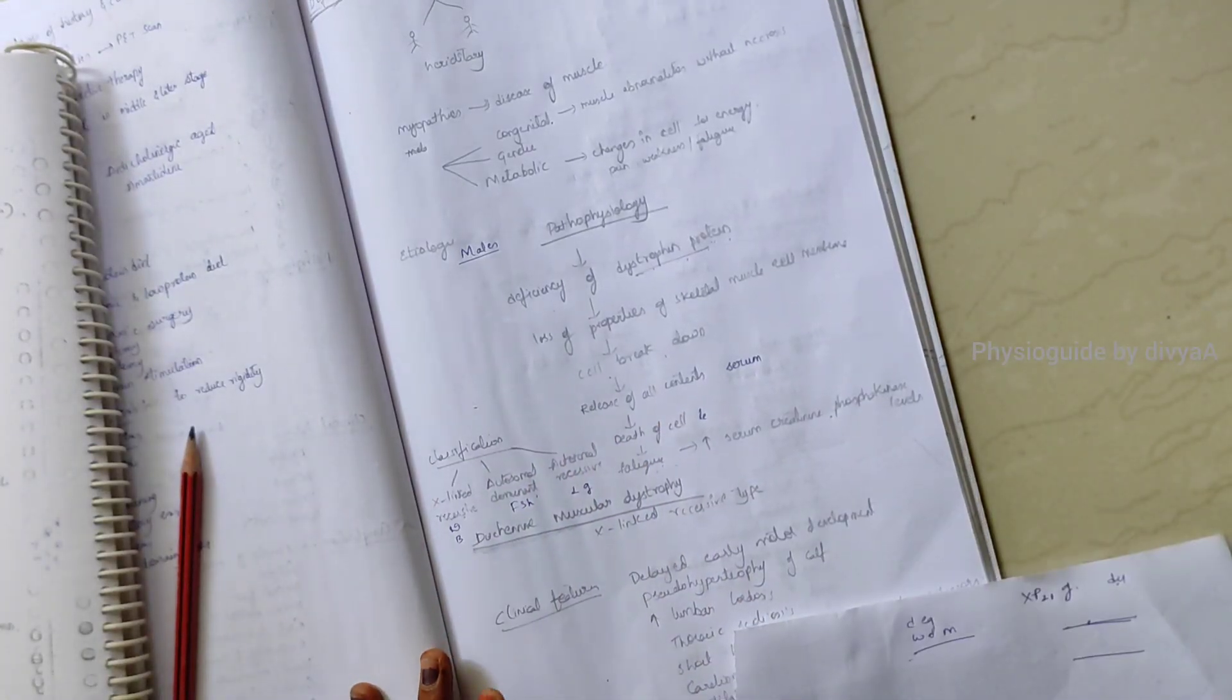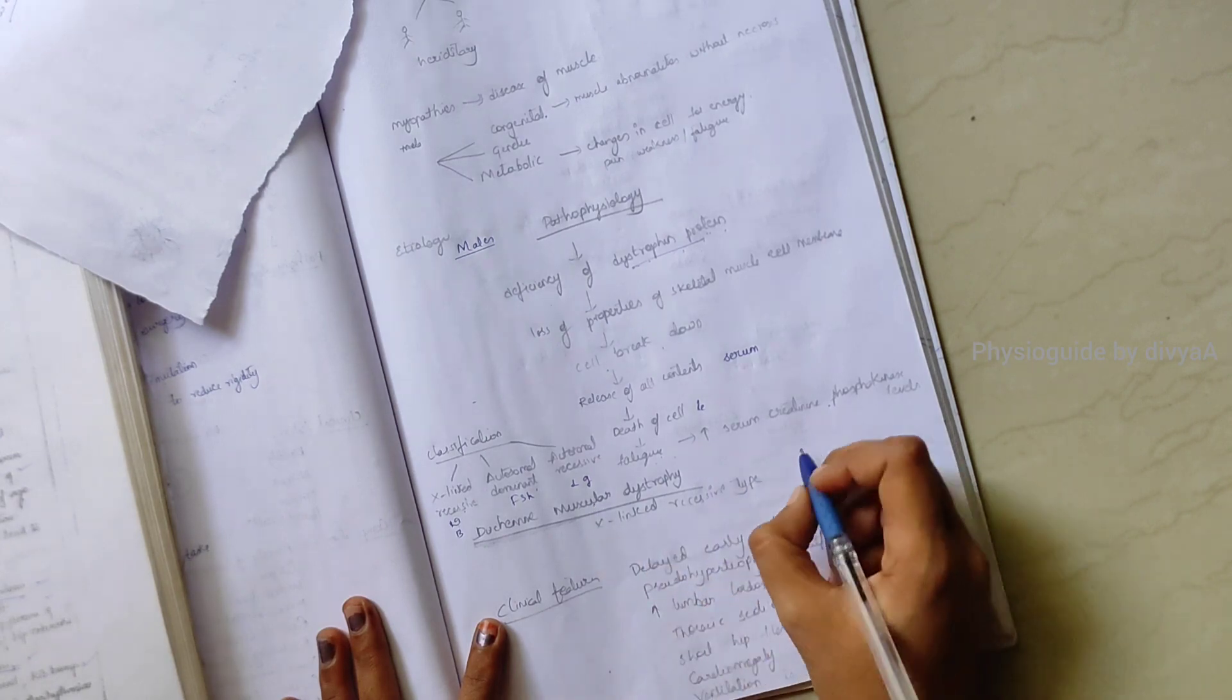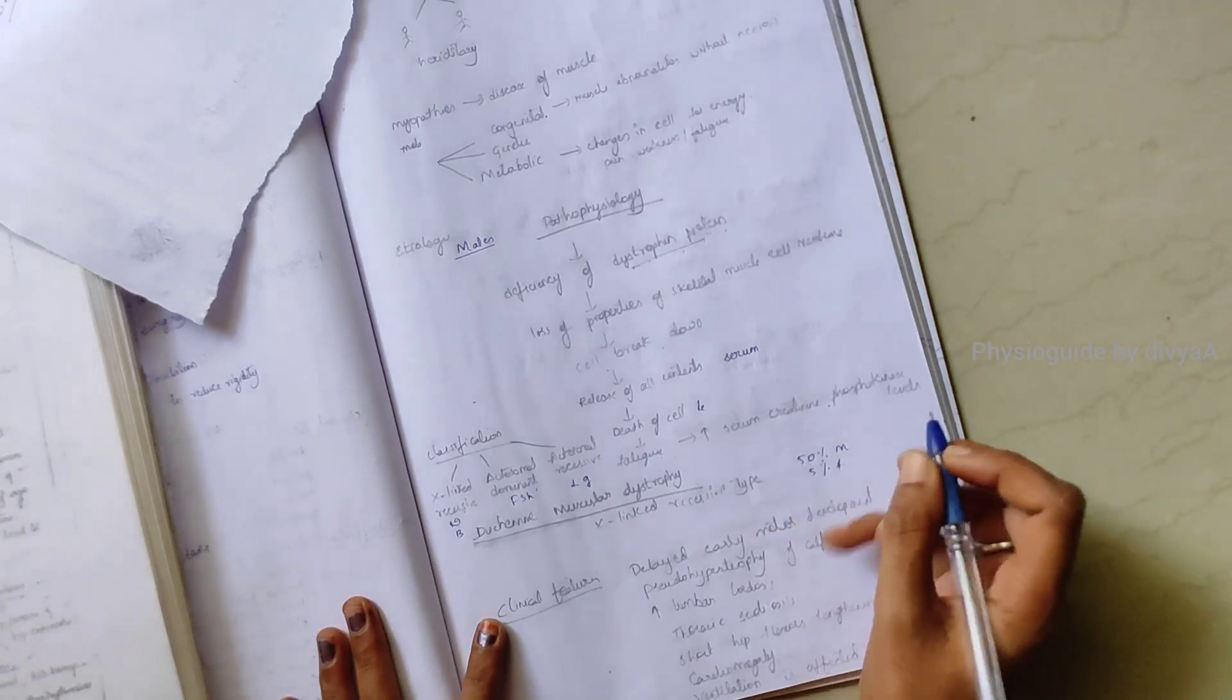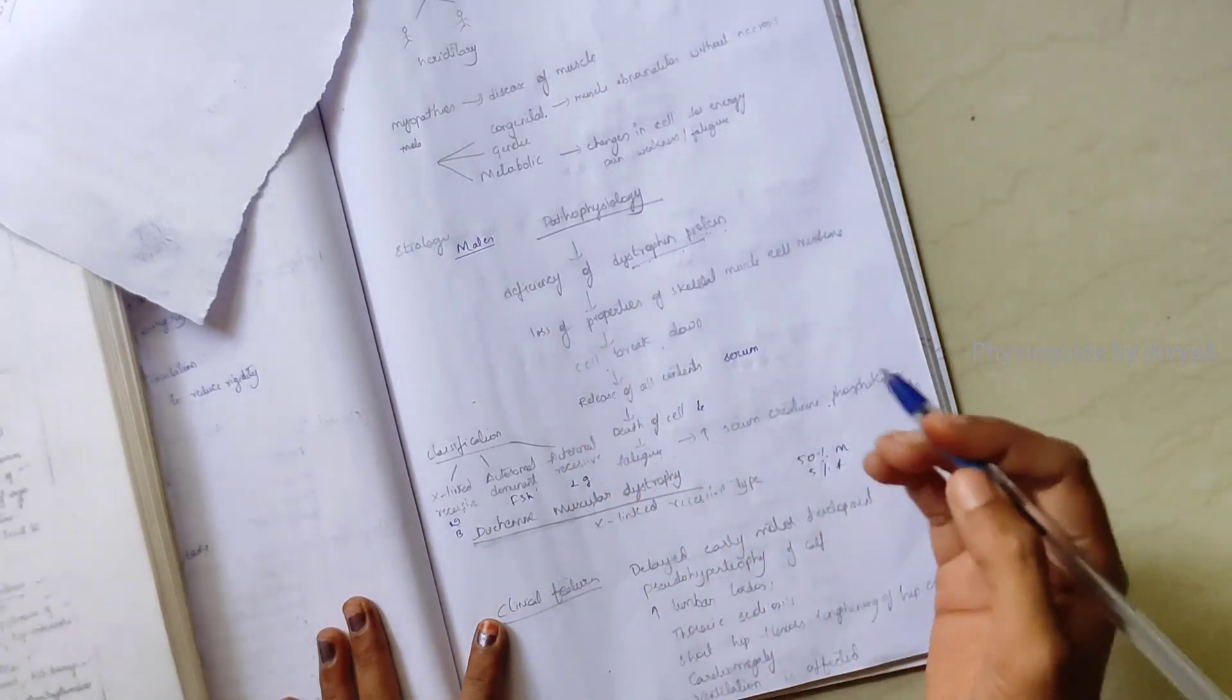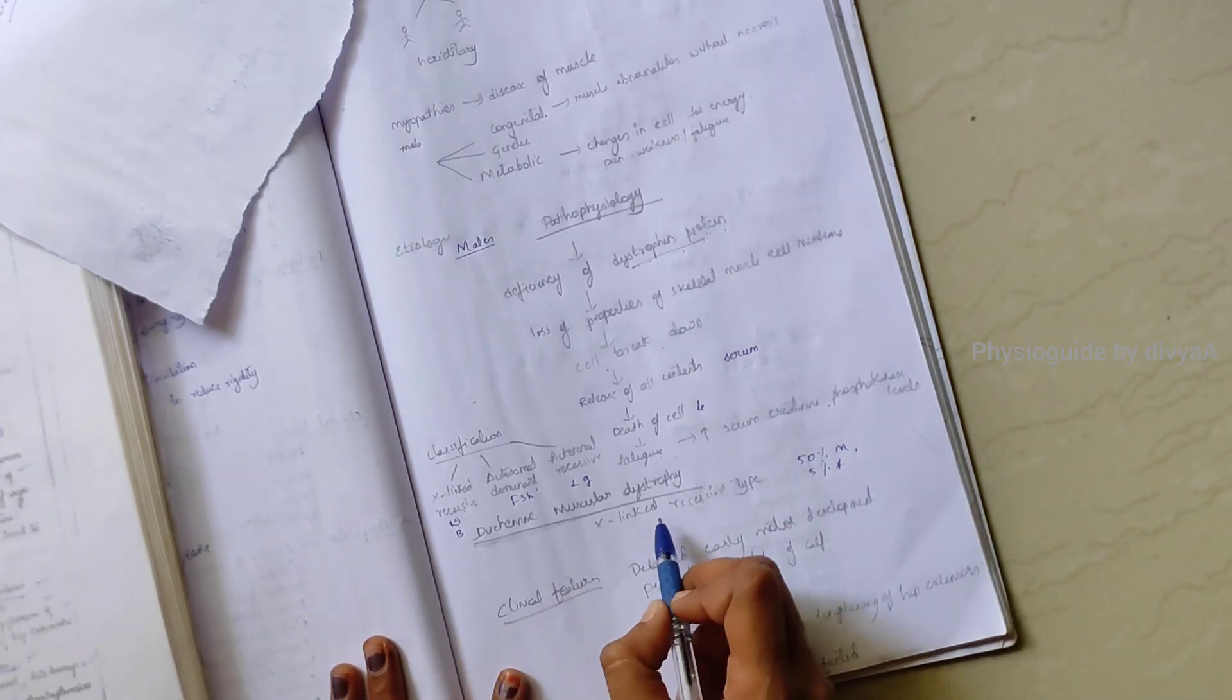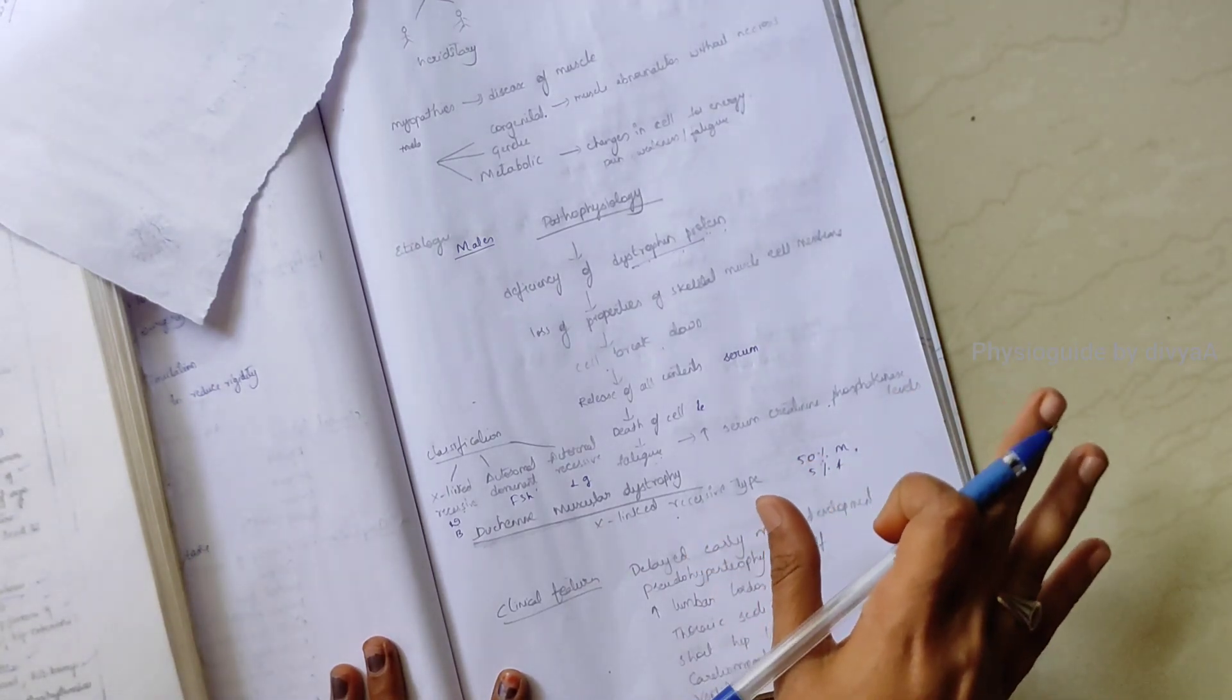Duchenne muscular dystrophy - it is the most common type of muscular dystrophy. This is seen mostly in 50 percent of males. 50 percent of females are carriers, means they don't get affected but they carry to the next generation. Males are mostly affected and mutation rate is higher than in any other X-linked hereditary disease.